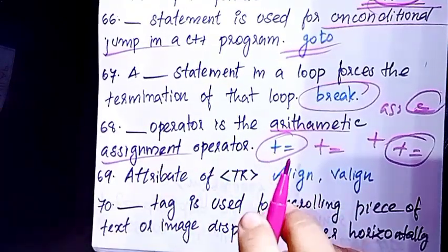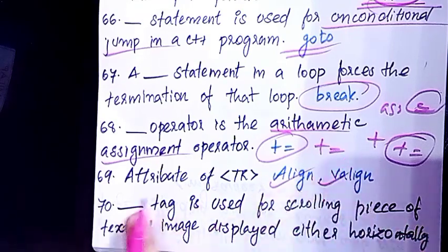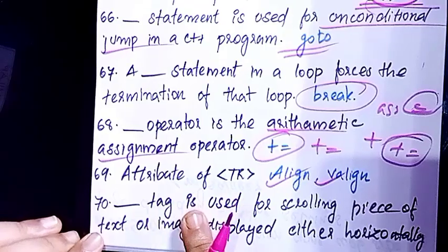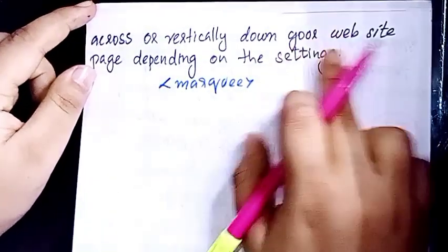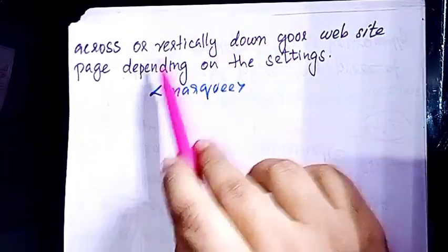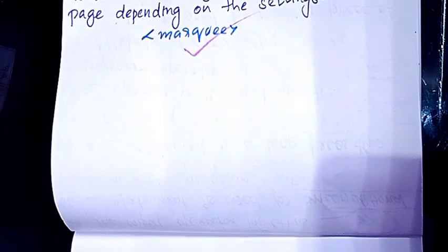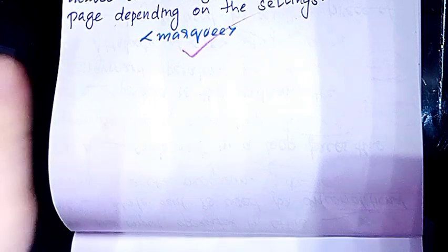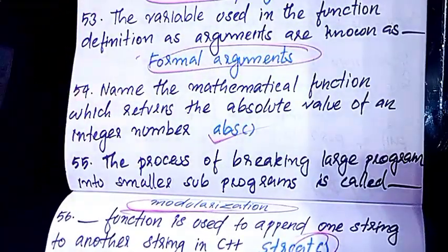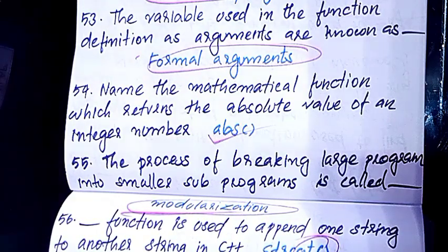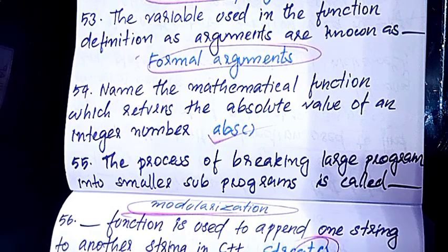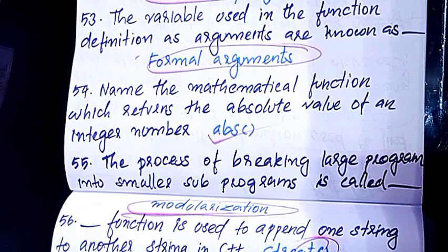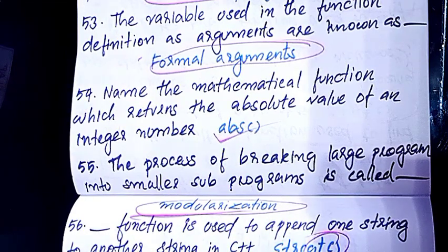The attribute of the tr tag is align and valign. The dash tag is used for scrolling a piece of text or image displayed either horizontally or vertically down a website page — that is the marquee tag. Thank you, please give us a thumbs up.